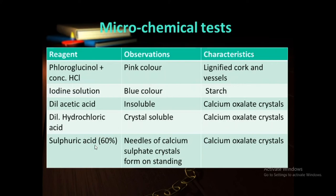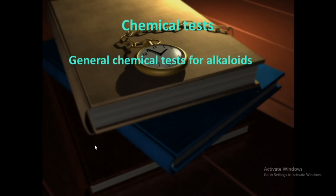Rauwolfia contains alkaloids — reserpine is the major indole alkaloid. These are identified using general chemical tests for alkaloids like Mayer's test, Dragendorff's test, Hager's test and Wagner's test — these are the four basic tests for alkaloid identification. There is no specific test for alkaloids in Rauwolfia; general chemical tests are used.